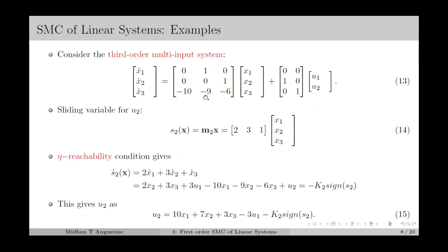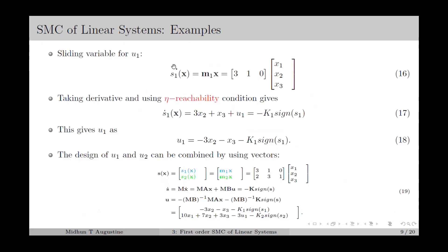Now consider a third order multi-input system with two inputs. We have added one more input u₂, which adds one more column to the B matrix. For u₂, we select the sliding variable as in equation number 14, with M₂ as given. The linear reachability condition gives s₂-dot equal to the corresponding expression, which we equate to minus k₂ sign(S₂) and solve for u₂ as in equation number 15. The sliding variable for u₁ is selected as in equation number 16, where M₁ is given. Using the linear reachability condition, we require s₁-dot equal to minus k₁ sign(S₁), and solving for u₁ gives the control input u₁ as in equation number 18.